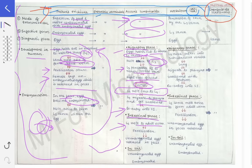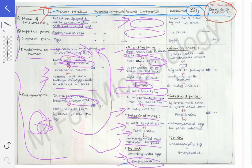After re-entry into the small intestine, the L4 molds to form the adult worm. Fertilization occurs, and unembryonated eggs are released in the feces. In the soil, the unembryonated eggs become embryonated, and those embryonated eggs cause infection again to another human after ingestion. This is the complete life cycle of Ascaris lumbricoides.